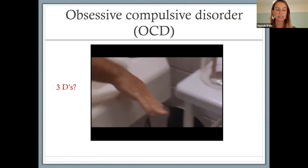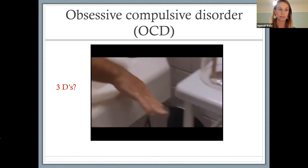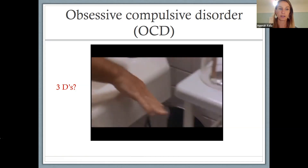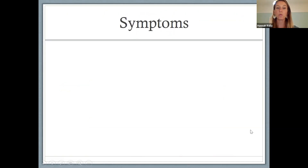Take another few seconds to type into chat — focus on dysfunction: how would the symptoms you just observed mess things up for him in terms of his job, relationships, or anything else? Responses: he'll be slow at everything, delaying things and maybe getting to work on time; might spend a lot on soap causing financial dysfunction; waste of resources; unable to focus on a task. Those could all be ways that his symptoms interfere and cause dysfunction for him.